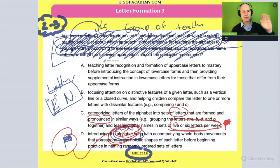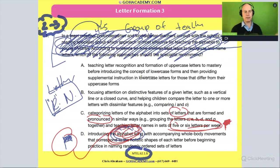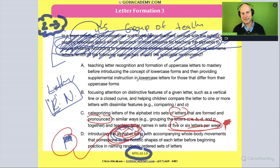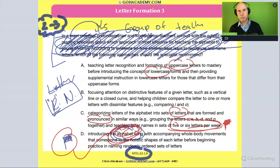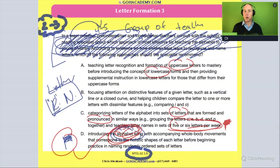Answer C suggests teaching letter recognition and formation of uppercase letters to mastery before introducing lowercase forms, then providing supplemental instruction in lowercase letters for those that differ from their uppercase form. This approach — uppercase before lowercase — does make sense since uppercase letters are easier to form.